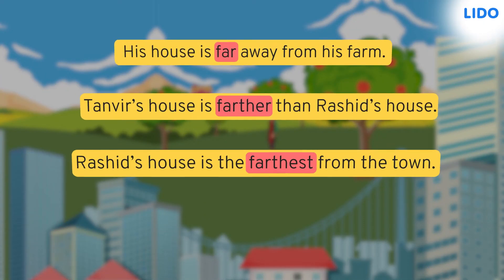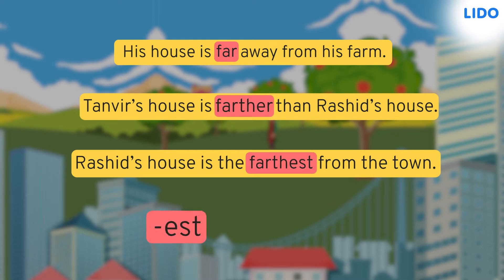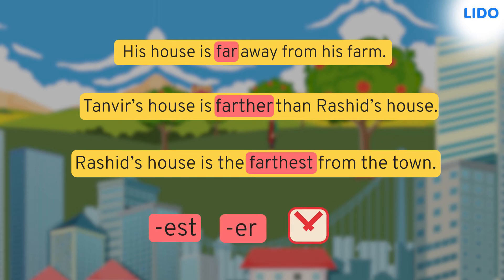These sentences show us the three degrees of comparison. The adjective is 'far' and the degrees show the different degrees of distance. But the adjective did not follow the EST or ER rule, did it?